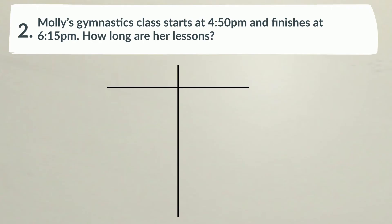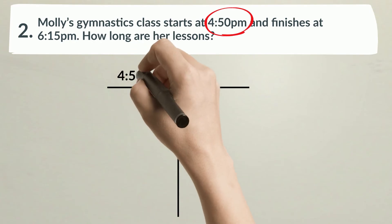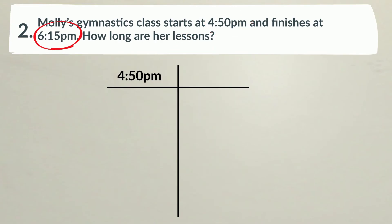We've been given the start time, 4:50, and the end time, 6:15. We need to work out the elapsed time. This means we're going to have to keep adding chunks of time to 4:50pm until we arrive at 6:15pm.